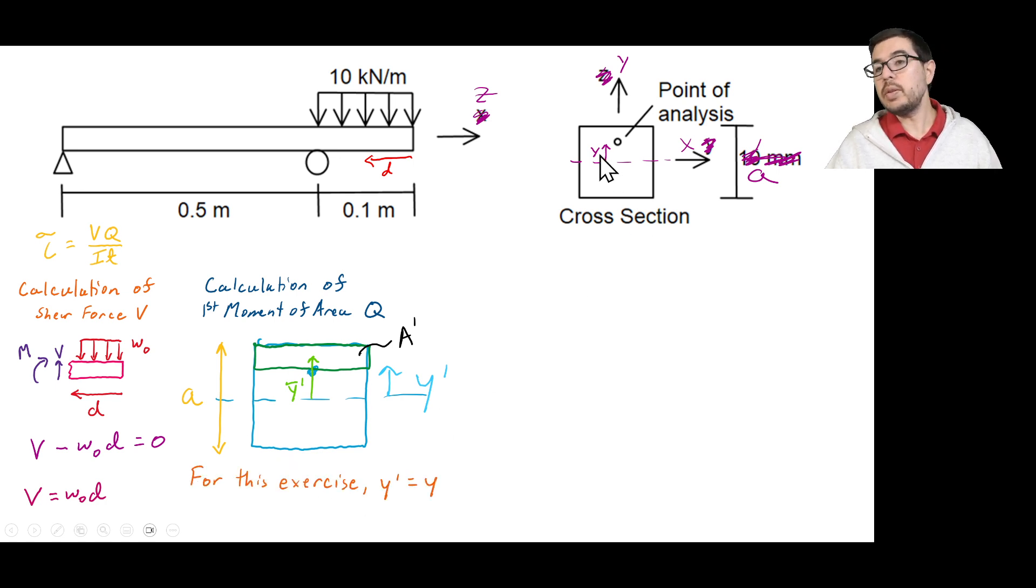And for this exercise, we will say, as I kind of mentioned previously, that y and y prime are going to be the same thing. And the first moment of area is going to be equal to q. And this q is integral of y prime d a prime, or it can be written as the y bar prime times a prime, as we see here. So we need to figure out what this y bar prime is, and we need to figure out what this a prime value is.